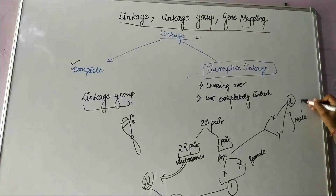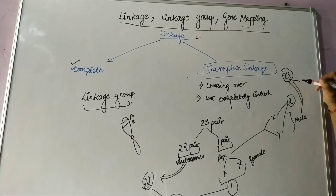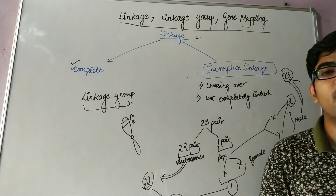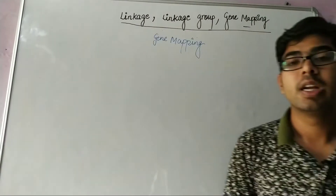Since males have X and Y — two different sex chromosomes — plus 22 from autosomes, there are found 24 linkage groups in males. Now we will discuss gene mapping.